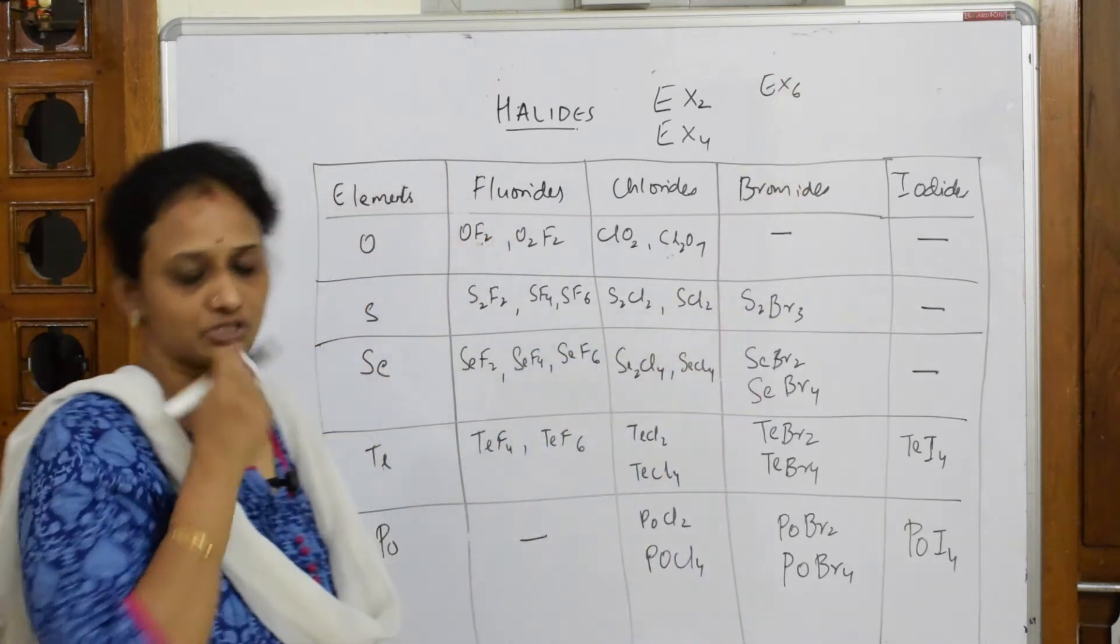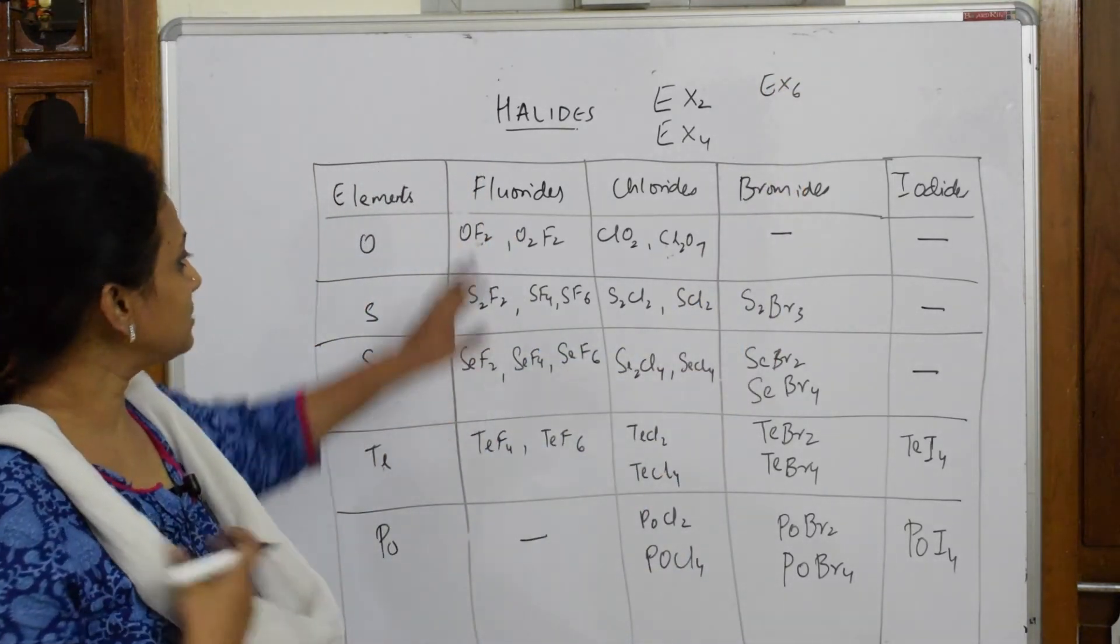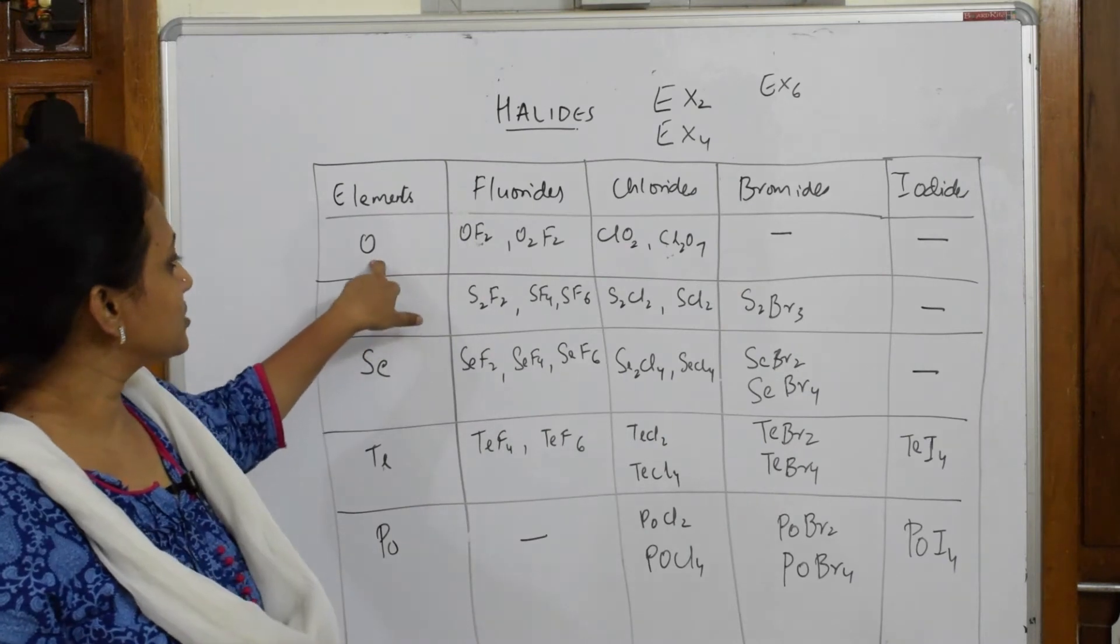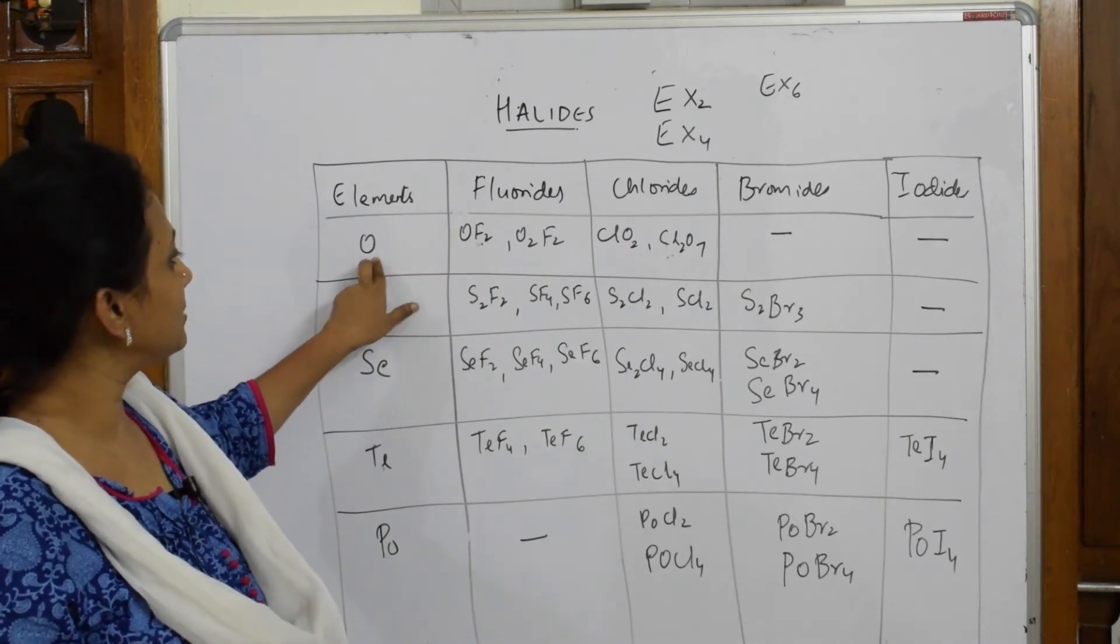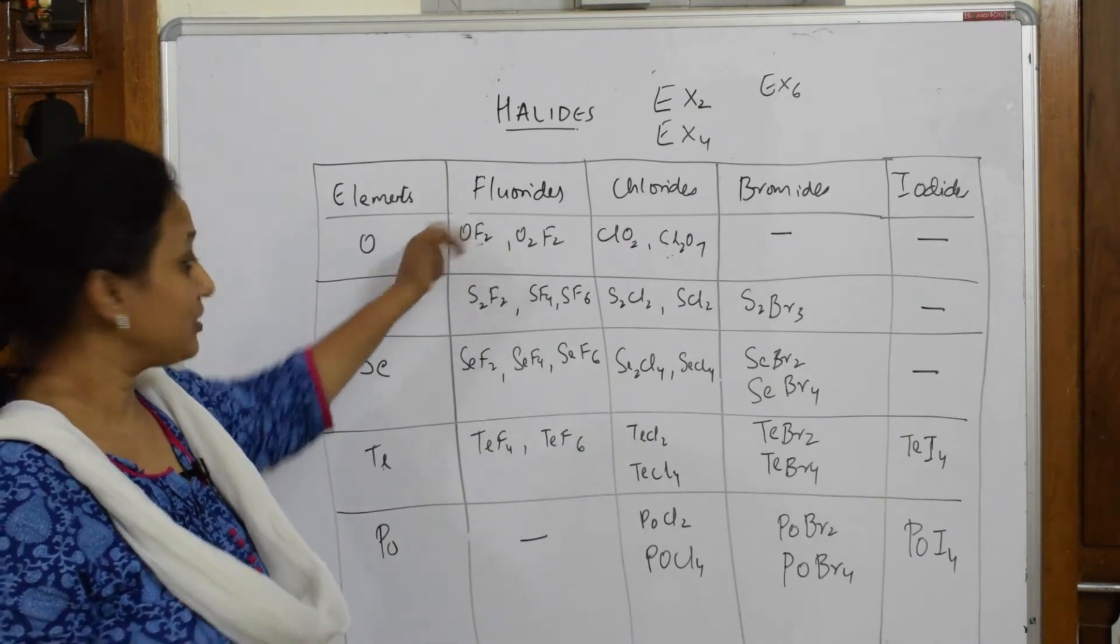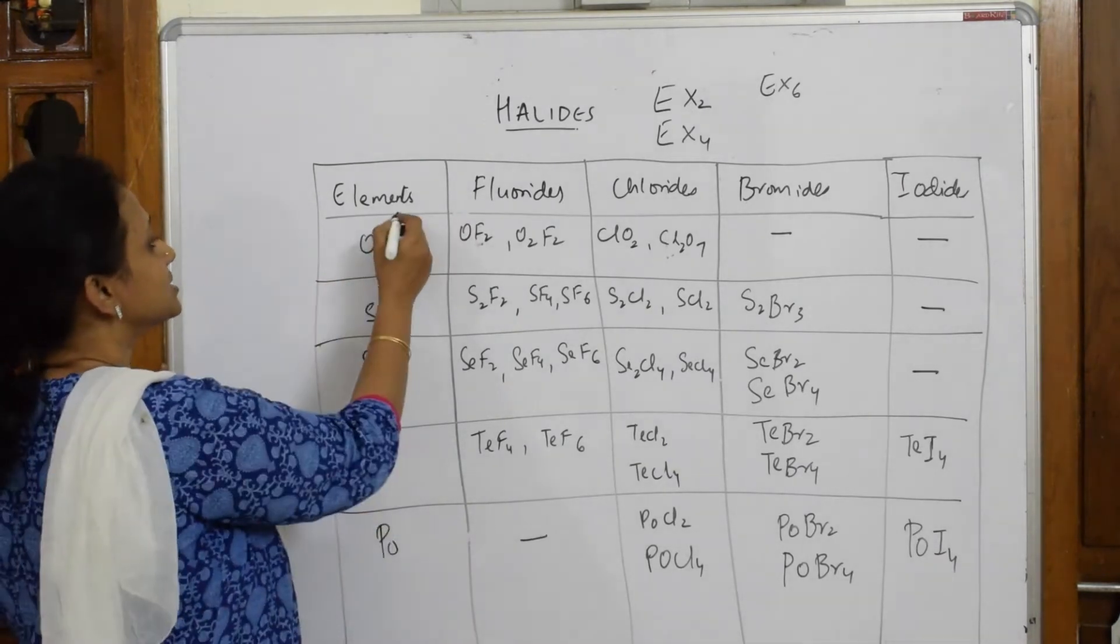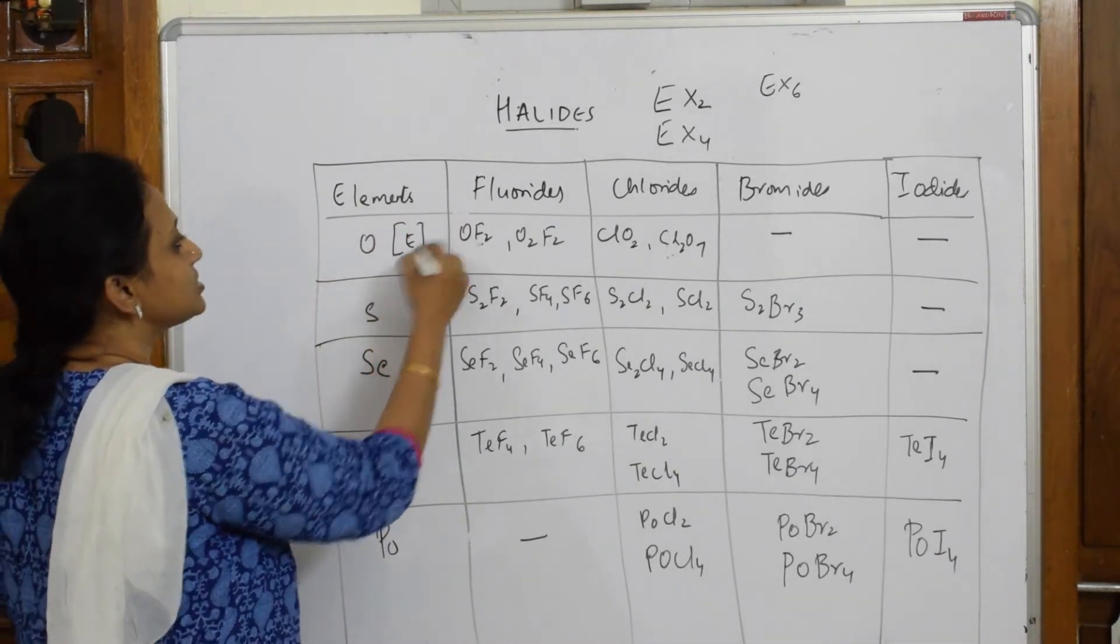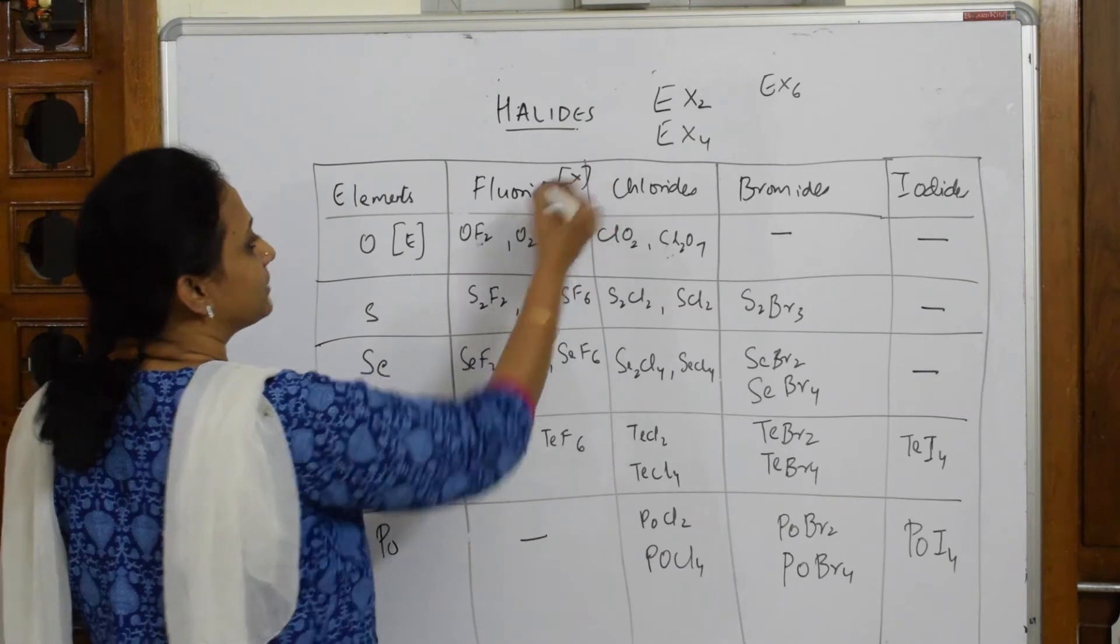So when I have to speak about your element, now suppose this is your element, then they're going to combine with the halogen. Then when they combine, I said now let us write this is your E and this is your X.